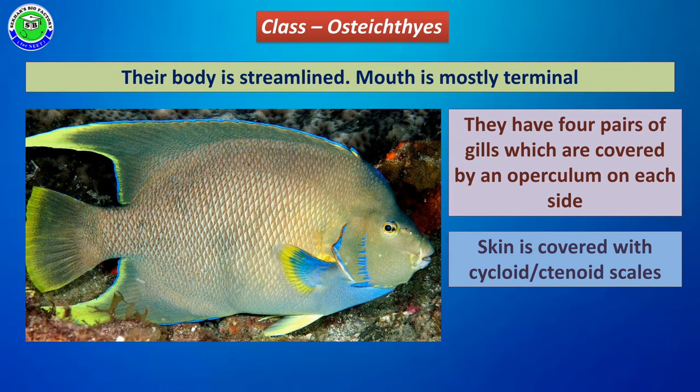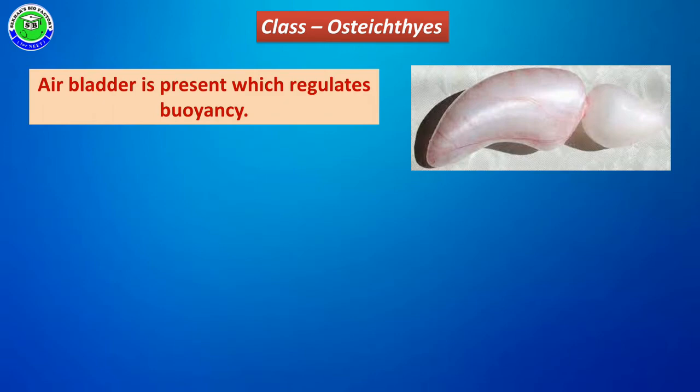The members have a skin, and on the surface of the skin they are covered with scales. The scales are of two types: cycloid scales, which have a cyclic ring-like structure, and ctenoid scales, which are flat. The skin is covered by either cycloid or ctenoid scales — this is another important character of Osteichthyes members.